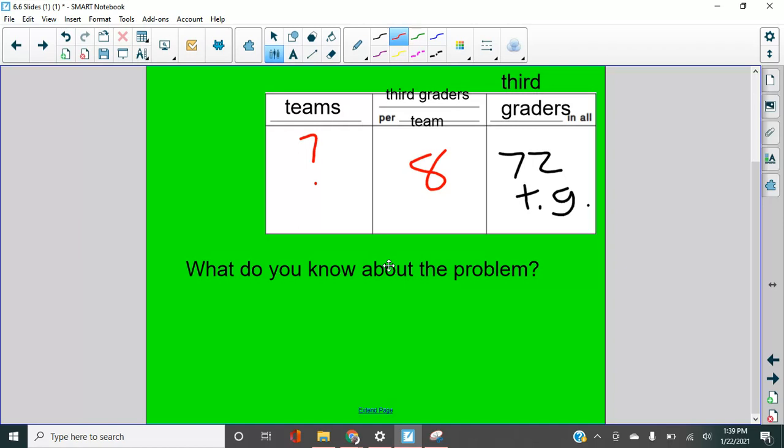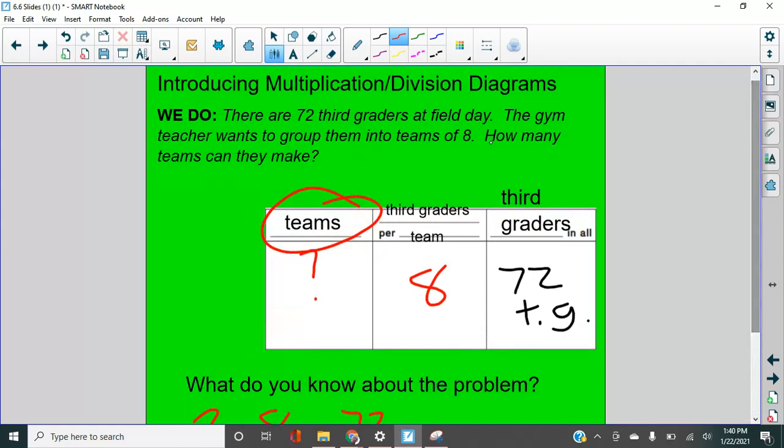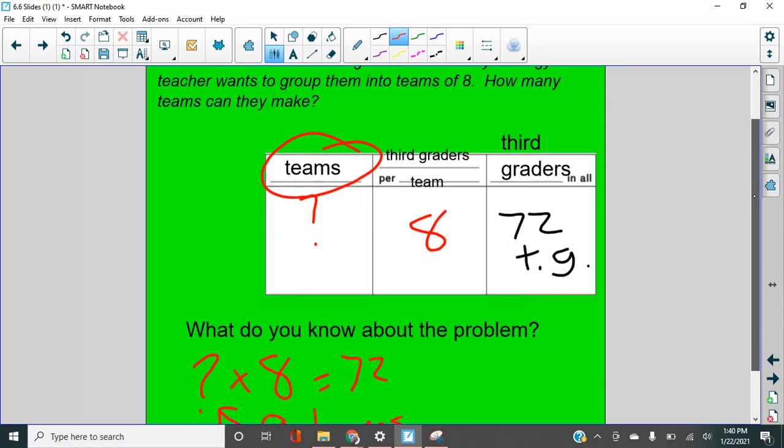All right. Here's what you should have written. Okay. You should have written a question mark or a blank or a letter. It doesn't matter what you put there. As long as you leave it empty times eight equals 72. All right. So what would make that true? Did you say nine? Nine would fit here. Nine times eight equals 72. Nine teams, right? I have to label my answer. Nine teams. As a complete sentence, I'm going to use a piece of the question they can make, or the teacher can make nine teams.